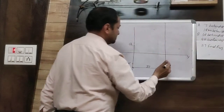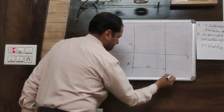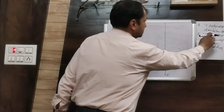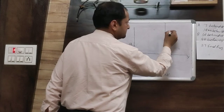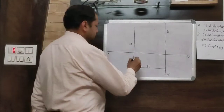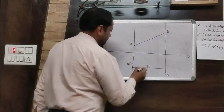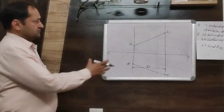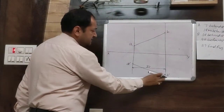The front view of point B is 49 mm below HP. Mark this on the projector line. Then join the top views of both points and the front views of both points. You get the projections: top view AB and front view A dash B dash.